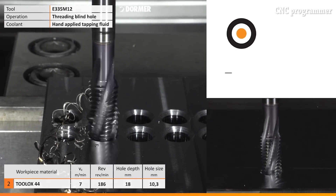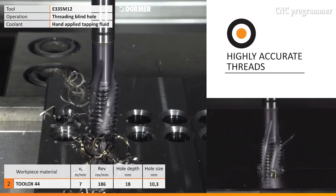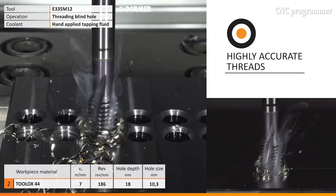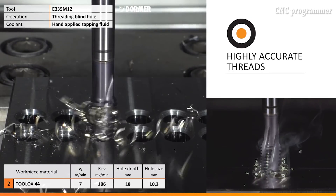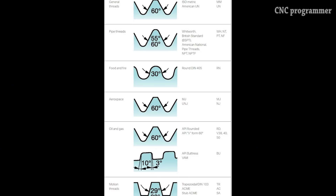Single or multi-thread. The thread form: The thread profile defines the geometry of a thread and includes component diameters — major, pitch, and minor — thread profile angle, pitch, and helix angle. The most common thread forms and profiles are shown below.